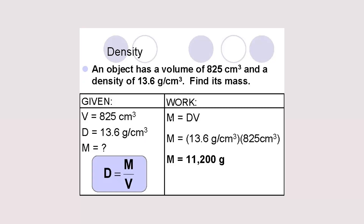So the division or multiplication will produce a number with three significant figures. To calculate the mass, you multiply the density times the volume: 13.6 grams per cubic centimeter times 825 cubic centimeters. The answer is 11,200 grams. This number has only three significant figures because there is no decimal point, so the two trailing zeros are not considered significant.